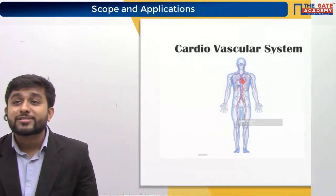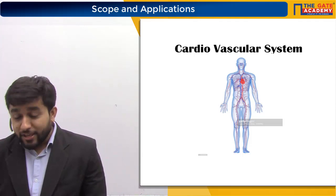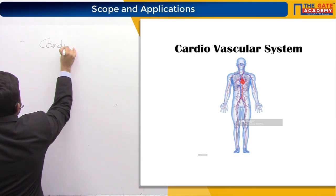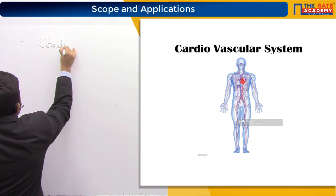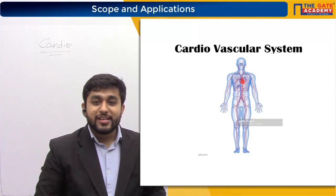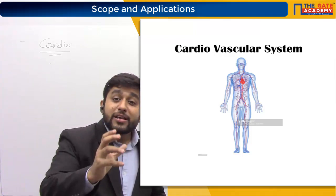Let us start with the human body. On the secondary screen you can see the cardiovascular system - heart, arteries, and veins. Every tissue has millions and billions of cells, and organs are made of millions of cells containing nucleus, mitochondria, and more. Every cell is performing some action.